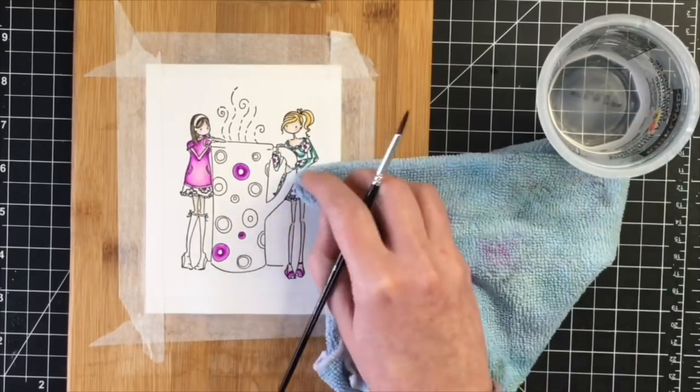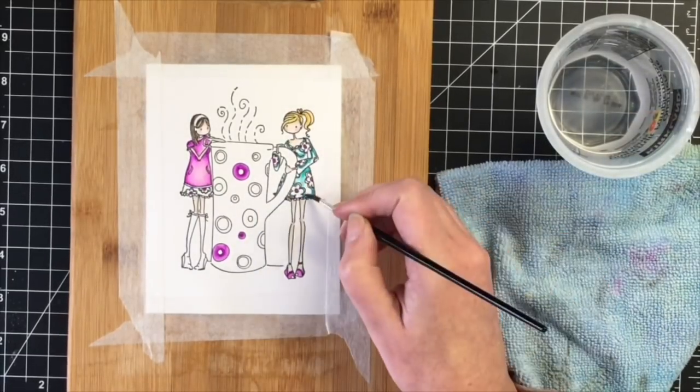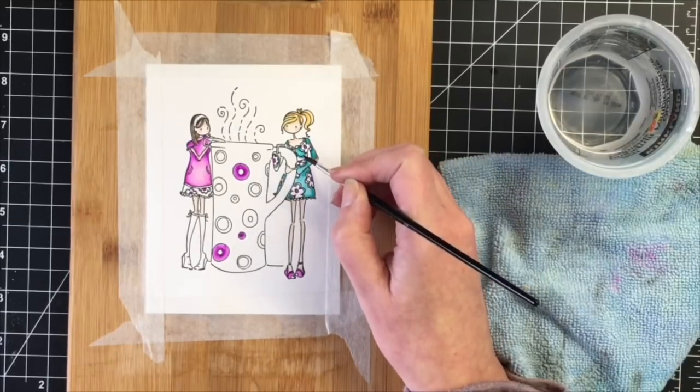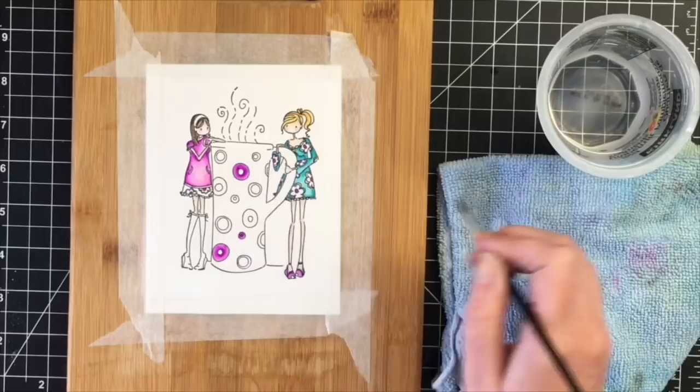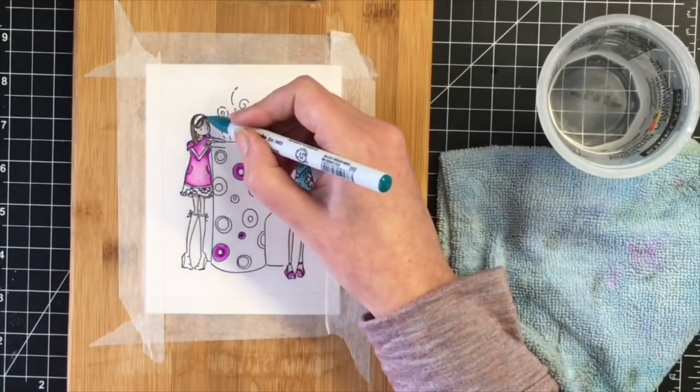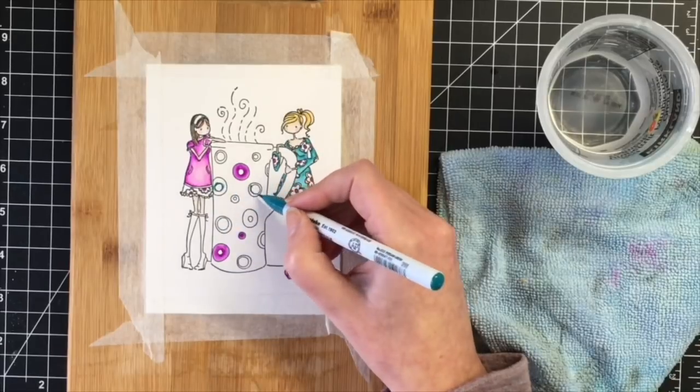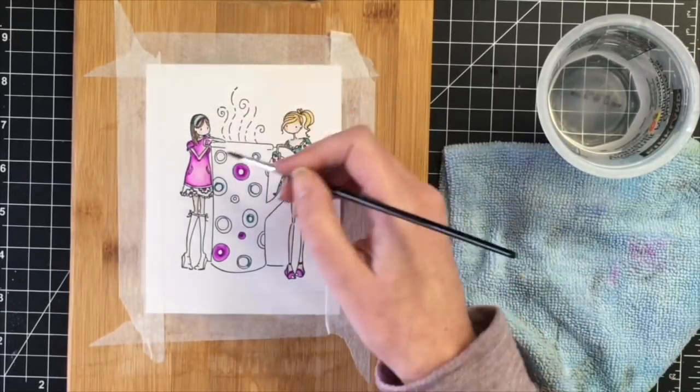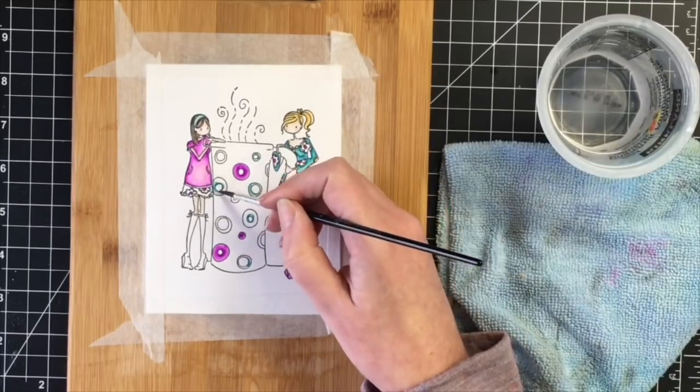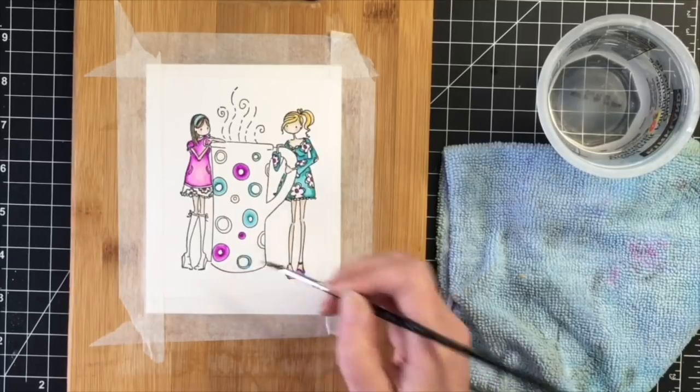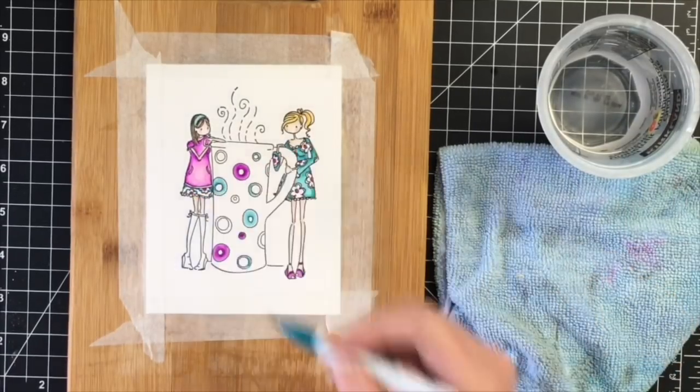So I have the stamp in front of me. What I love about Stamping Bella is they have a colored image on the front of the package. And even though I didn't use the same colors that are on that example, I did use it as a guide in terms of putting the color in the same spots that they had a color.